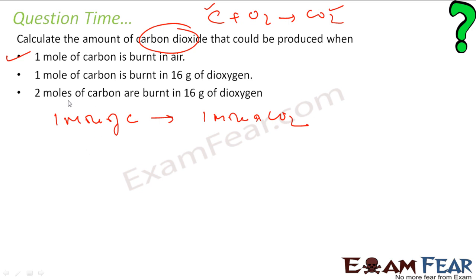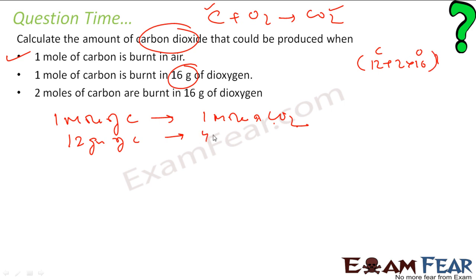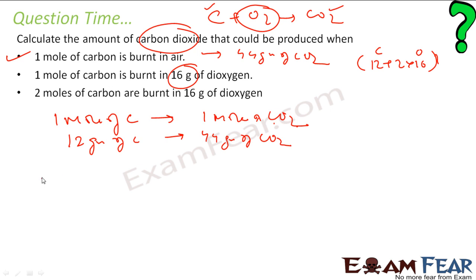Second: 1 mole of carbon is burnt in 16 grams of O₂. From the reaction, 1 mole of carbon requires 1 mole of O₂. That is, 12 grams of carbon gives 1 mole of CO₂, which is 44 grams (molecular weight = 12 + 16×2 = 44). So 1 mole of carbon plus 1 mole of O₂ gives 1 mole of CO₂.